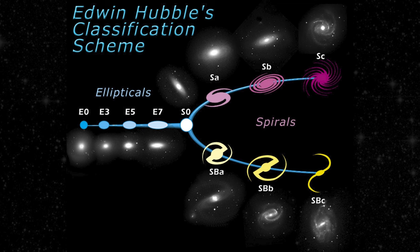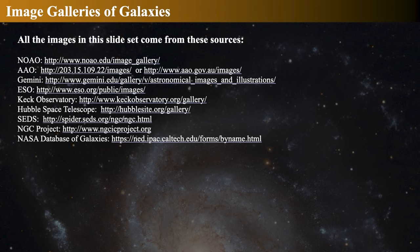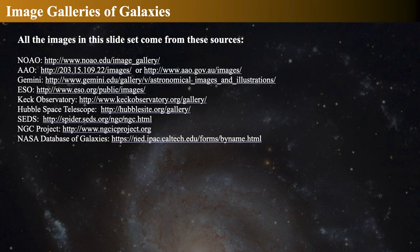Hubble's classification scheme looks a lot like this, with ellipticals and spirals. I derived all of the images you'll see from lots of different sources: the National Optical Astronomical Observatory, the Australian Astronomical Observatory (AAO), the Gemini Observatory, European Southern Observatory, Keck on Mauna Kea, and lots of things from the Hubble Space Telescope. I also used the SEDS group, the NGC project, and the NED database — the NASA Extragalactic Database of Galaxies. And a lot of these also appeared in Astronomy Picture of the Day; if you Google APOD, you'll see many of these.